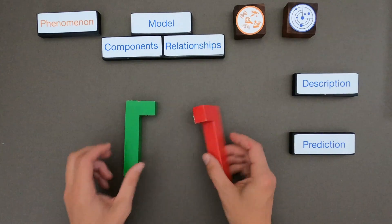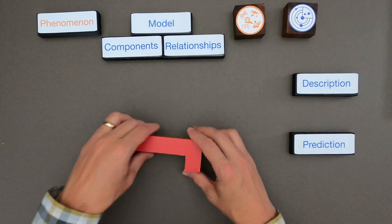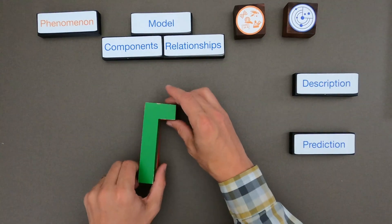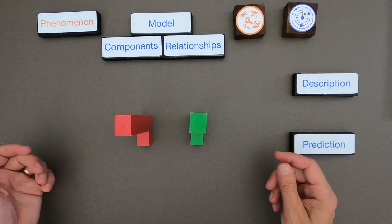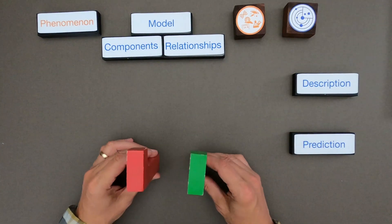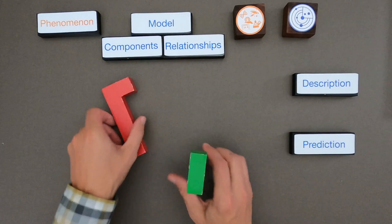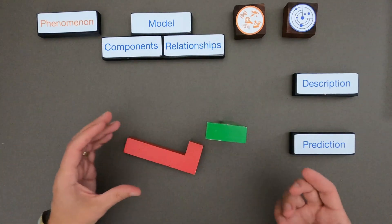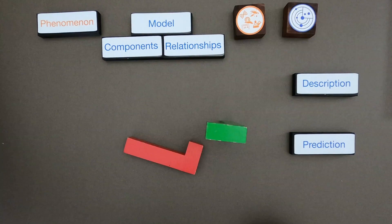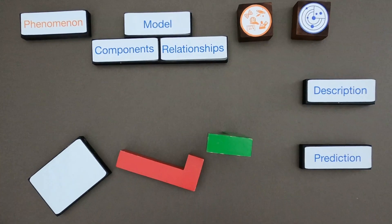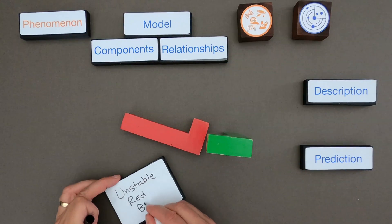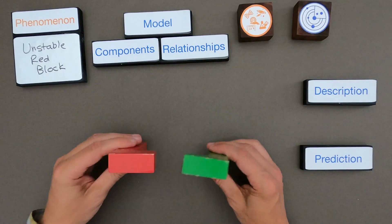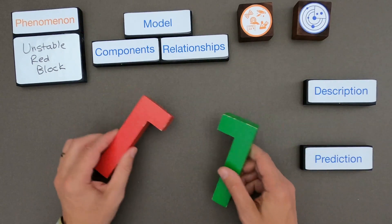So for this phenomenon what I have are two blocks — they are wooden blocks. You can hear them. They're about the same size and about the same shape. When I put them on the table they'll just sit there. However when I put them on the table like this and just let it go, the red block is unstable. No matter what I do, the red block is going to be unstable. So let's write down what the phenomenon is: the red block is unstable even though it looks like the green block.